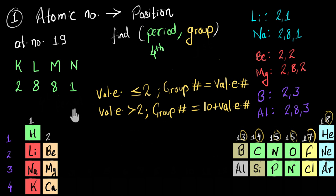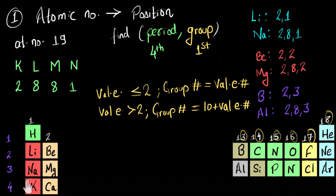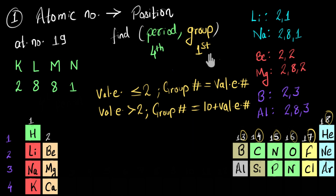Coming back to our element with atomic number 19: it has one valence electron. According to the rule, it belongs to group 1. So this element belongs to the first group and the fourth period — and as you can see, potassium occupies this position. So we are talking about the atom of potassium. To summarize: given the atomic number, write the electronic configuration; the number of occupied shells gives the period number, and the number of valence electrons gives the group number.